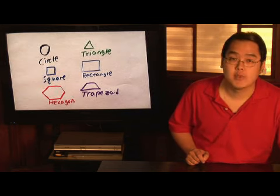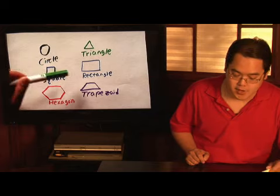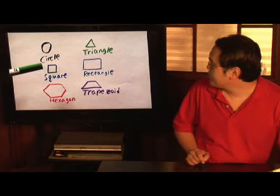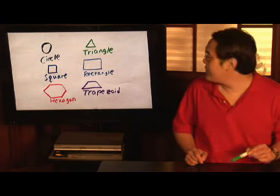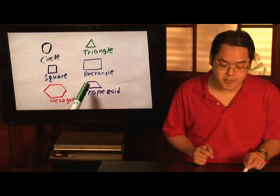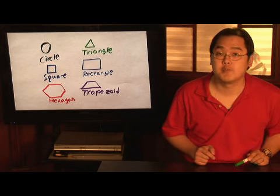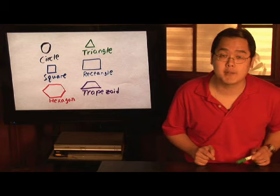Now, if it's four sides, you have a couple of options here. You have a rectangle, a square, in which all the sides are equal, or you can have, for example, a trapezoid, where if you notice, the top side is smaller, shorter, if you will, than the bottom side.